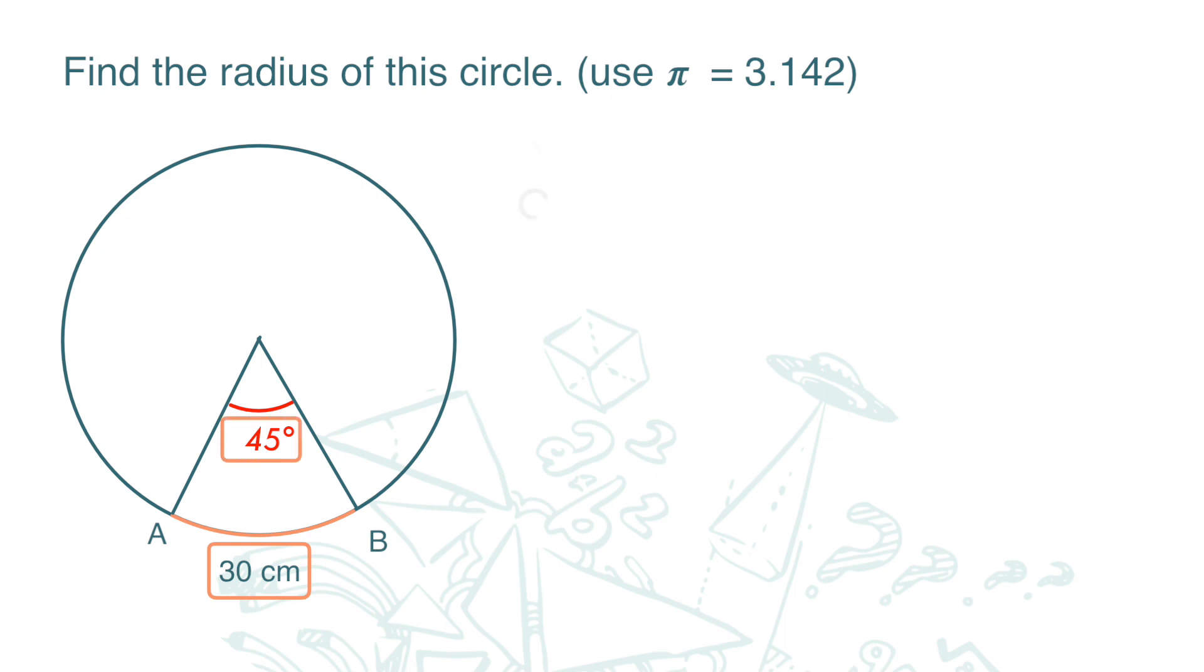Here we use circumference over length of arc is equal to 360 over angle at center. It's easier this way because we want to find radius and radius is in the formula of circumference.